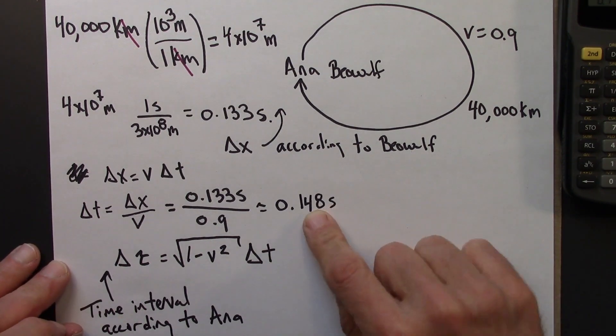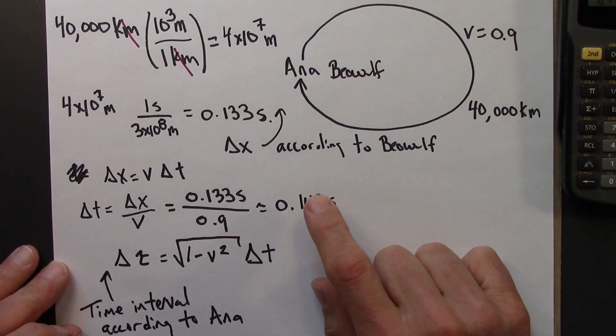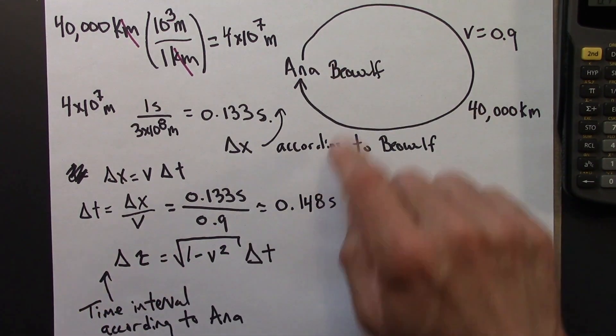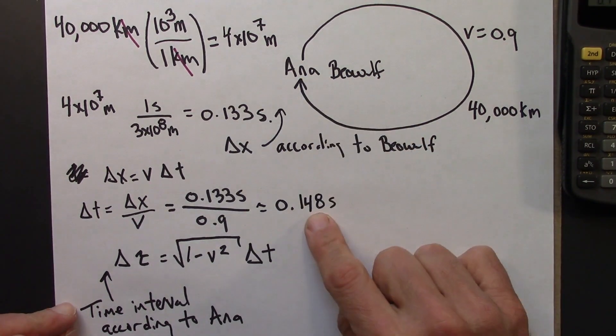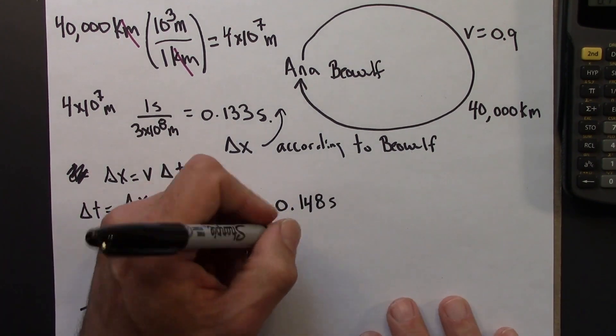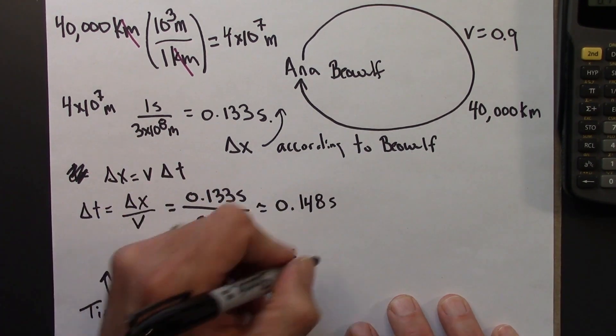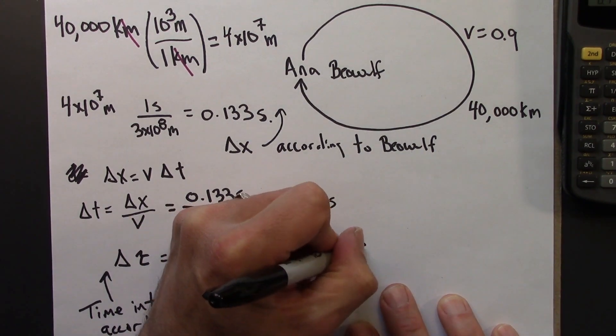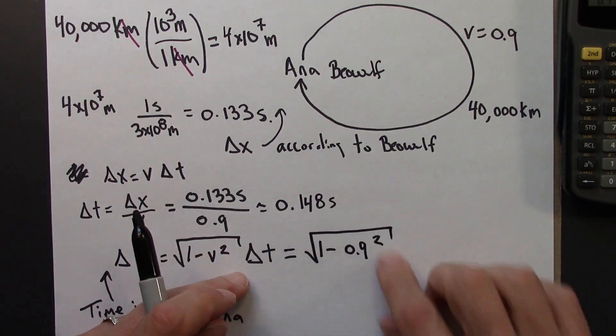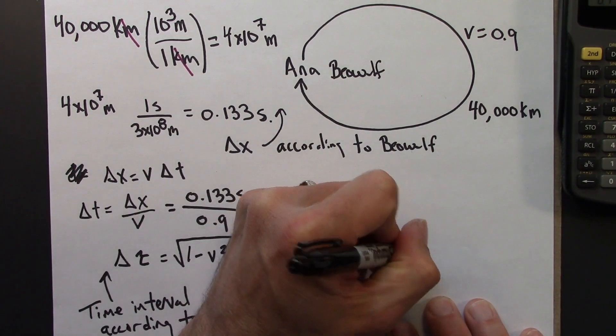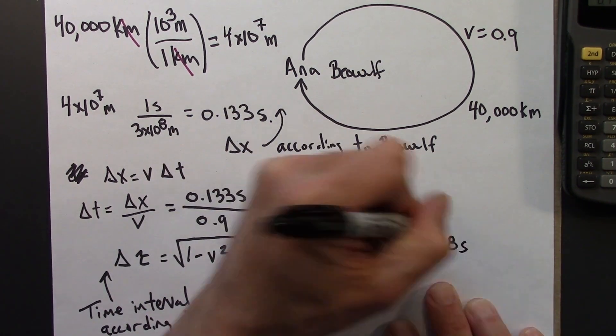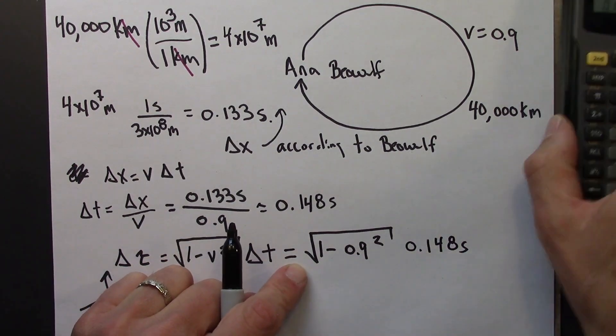So delta tau, we have delta T, that's the time interval for the same thing, arrival and departure of Ana, but in Beowulf's reference frame. And then we have V, so we can plug everything in and we'll get the proper time. This is going to be 1 minus 0.9 squared times delta T. Delta T is 0.148 seconds. Let's evaluate this square root thing.